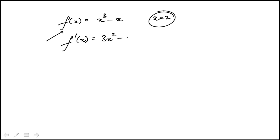That's 3x squared minus 1. And I have to compute the slope at x equal to 2. So that's going to be 2 squared minus 1. So this would be the slope of the tangent line at x equal to 2. So that's 4 times 3, 12, 11.